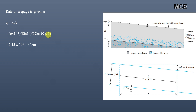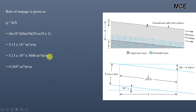The question asks us to calculate the result in units of m³/hour per meter, so we multiply by 3600. Therefore: 5.13 × 10⁻⁵ × 3600 = 0.1847 m³/hour per meter.